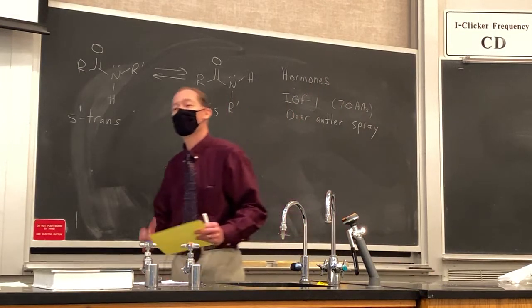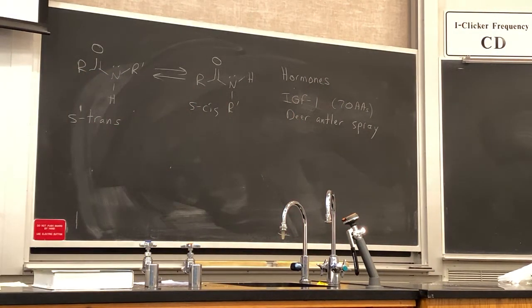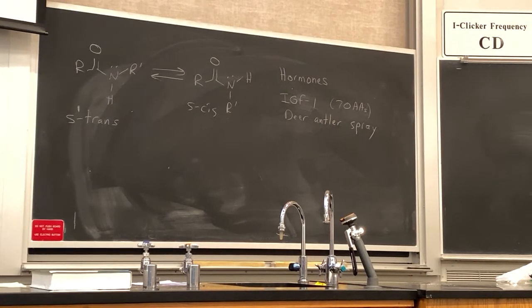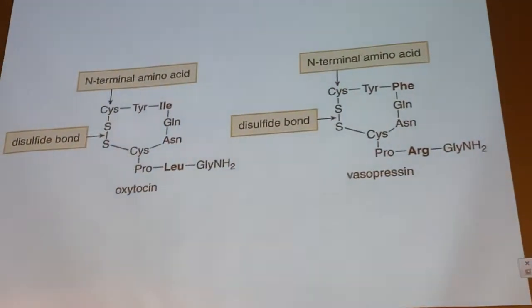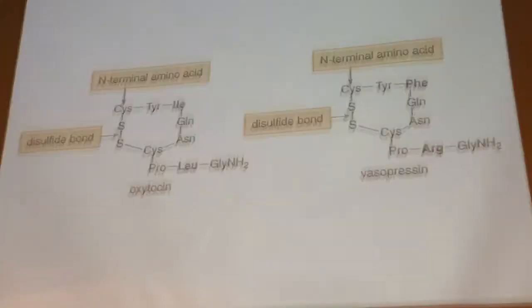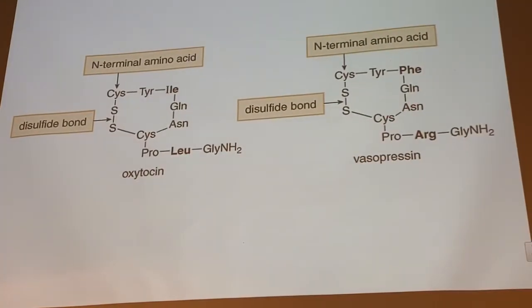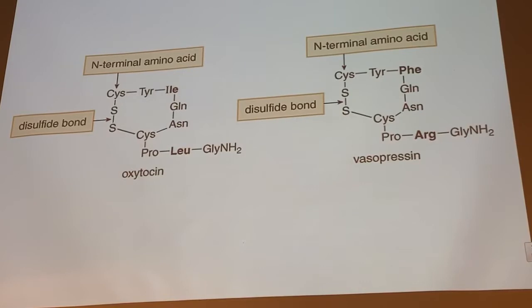Some peptide hormones are modified in terms of their structures. Sometimes they have crosslinks between the side chains that form rings. Shown here are oxytocin and vasopressin using their abbreviations. A common way to form a ring in a peptide is to have a disulfide bond between the sulfurs of two cysteines.